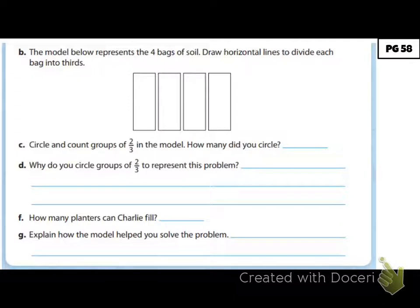Part B: The model below represents the four bags of soil. Draw horizontal lines to divide each bag into thirds. So let's split these up into thirds. There's three parts to each one. Now we need to go through and circle and count the groups of two-thirds to represent this problem. So we need to circle one-third, two-thirds, another two-thirds, another two-thirds, and another two-thirds. Do not forget about the two-thirds on the bottoms of each one.